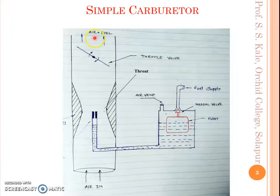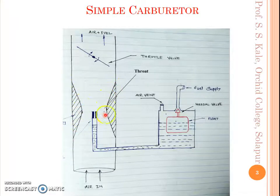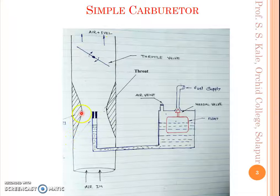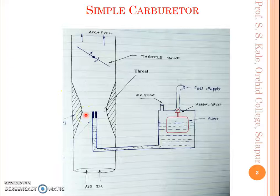This tube is going to the intake manifold of the engine. Inside the tube we have a varying cross section — the area first goes on reducing and then goes on increasing. So it is a venturi shape that is provided here.